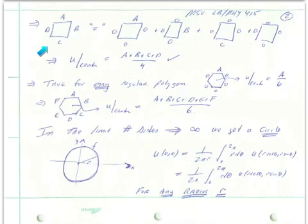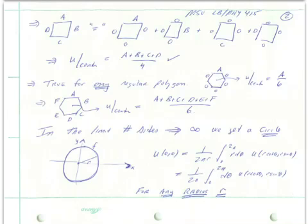Now we can consider the general case, where we hold one side at a, another side at b, the third side at c, and the fourth side at d. This solution corresponds to the sum of four solutions: one solves Laplace's equation with the top side equal to a and the other three equal to zero; the next has the right side equal to b and the three sides equal to zero; the third has the bottom side equal to c; and the fourth has the left side equal to d. From what we just said, the values at the center for each of these solutions are a over four, b over four, c over four, and d over four. So by linearity, the solution has the property that the value of u at the center is the average, a plus b plus c plus d over four.